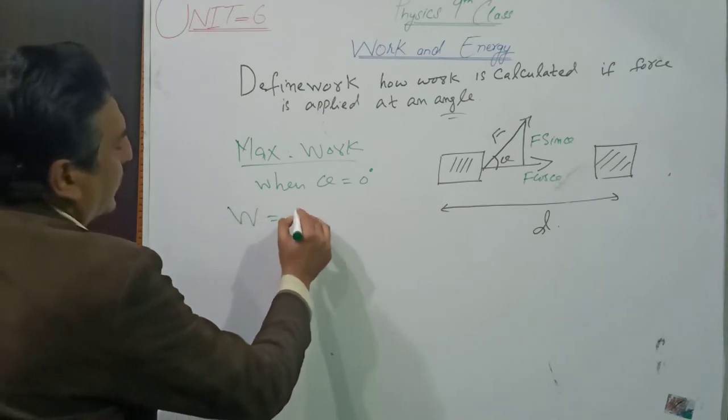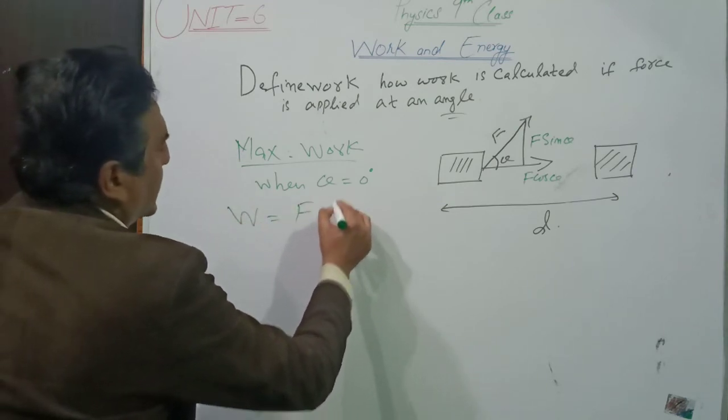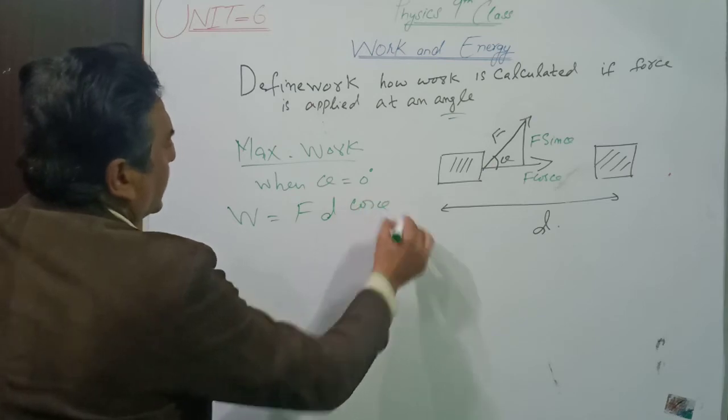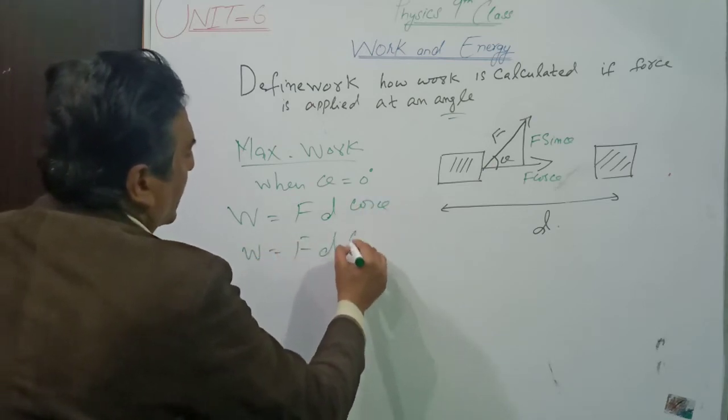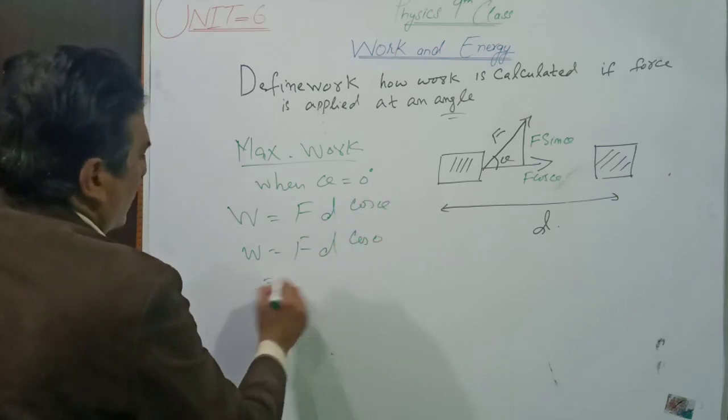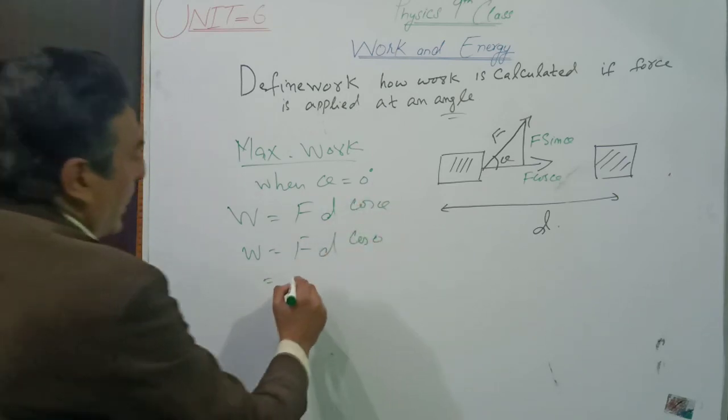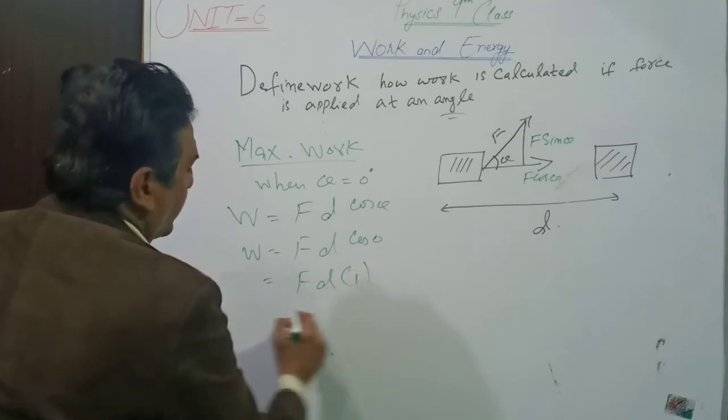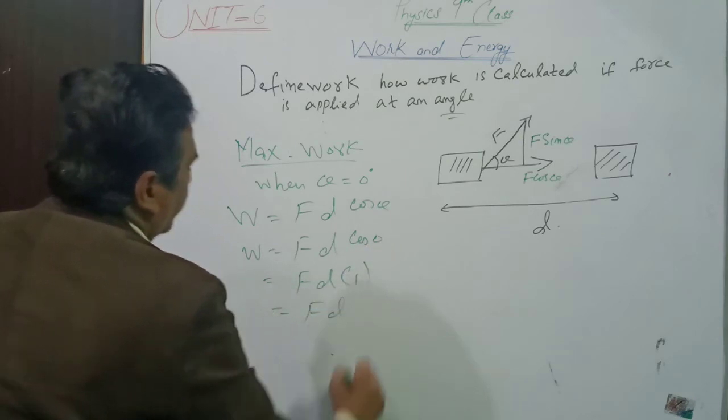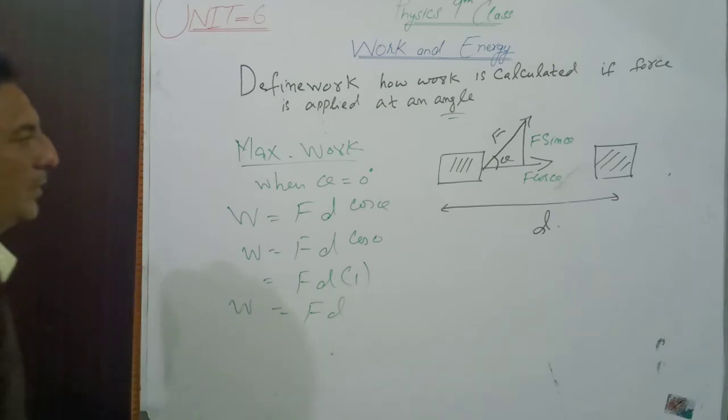We write the formula W equals F d cos theta. W equals F d cos 0. The angle is 0, F d cos 0 is 1, so W equals F d. When the angle is 0, maximum work is done.